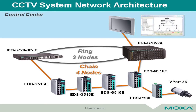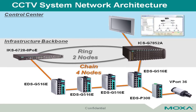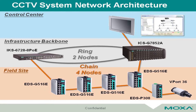As you can see, here is the control center with our network management software. The two Ethernet switches connected in a ring topology represent the backbone network. At the field side, there are four managed Ethernet switches connected in a chain and also one unmanaged PoE switch.